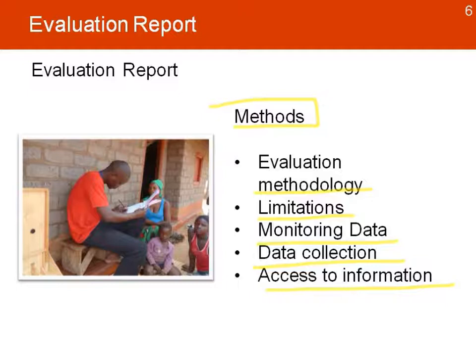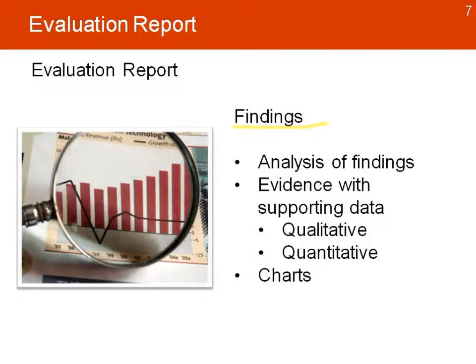The whole methodology will be explained in detail and sometimes they will add additional annexes that describe in detail all the information collected. The findings section is basically looking at the data and making an analysis, providing evidence with supporting data, whether qualitative or quantitative, about what was discovered. It's very useful if they include charts that can help explain those findings in a very factual manner with numbers that describe changes or any problems found in the project. It is not a place where the evaluator places opinions, but findings supported with data.